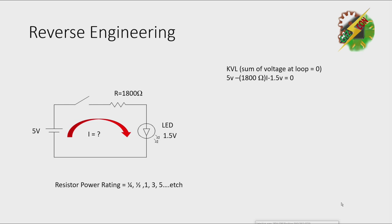We're going to generate 5 volts minus 1800 ohms times I minus 1.5 volts equals zero. And by applying algebra, we're going to come up with an answer of 1.944 milliampere. By checking the specification of the LED, 1.944 milliampere is still inside the range of 1 to 3 milliampere.